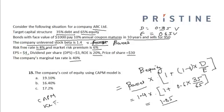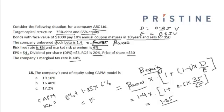Using the CAPM model, cost of equity equals the risk-free rate of 8% plus beta equity (1.85) multiplied by the market risk premium of 6%, giving a cost of equity of 19.10%.